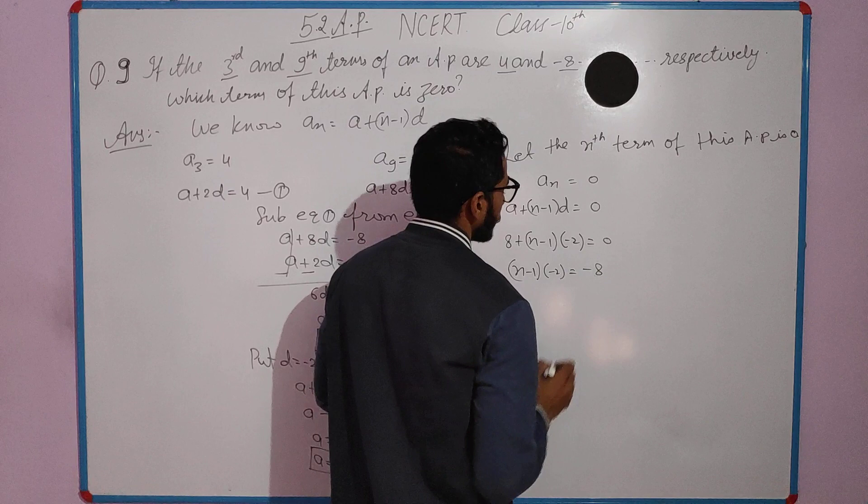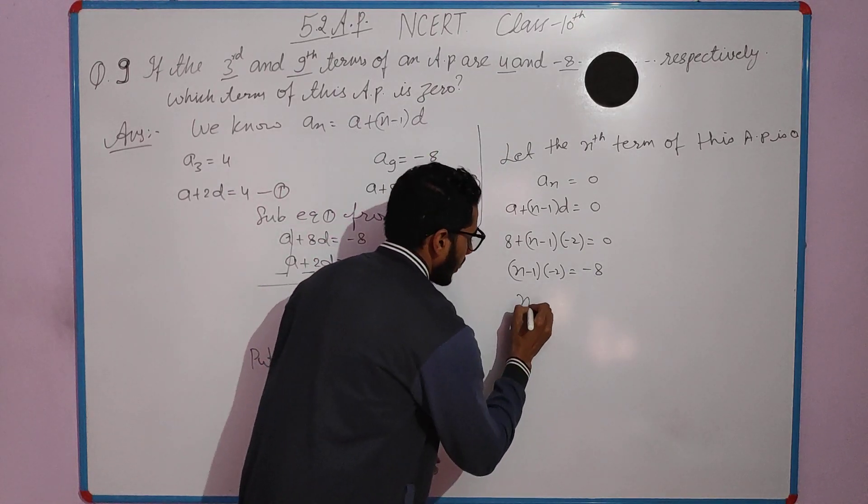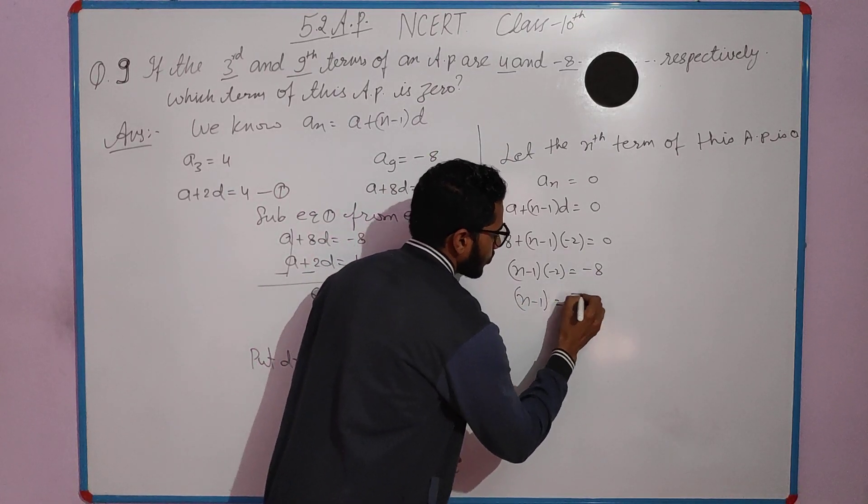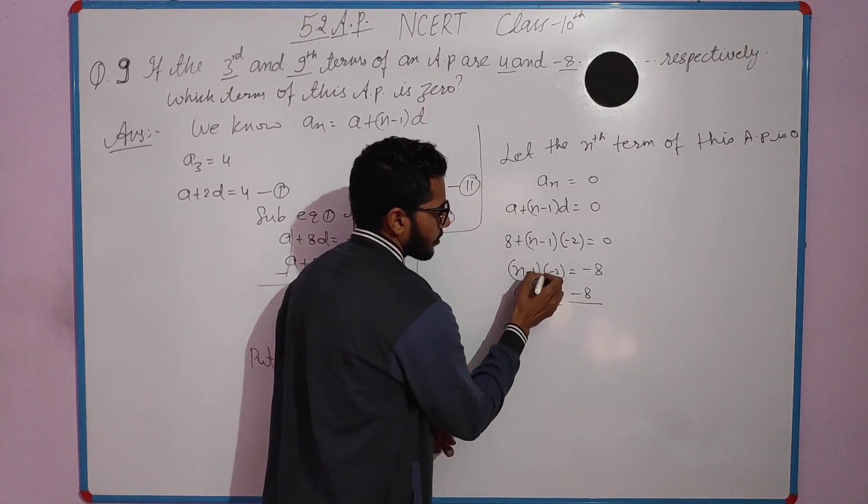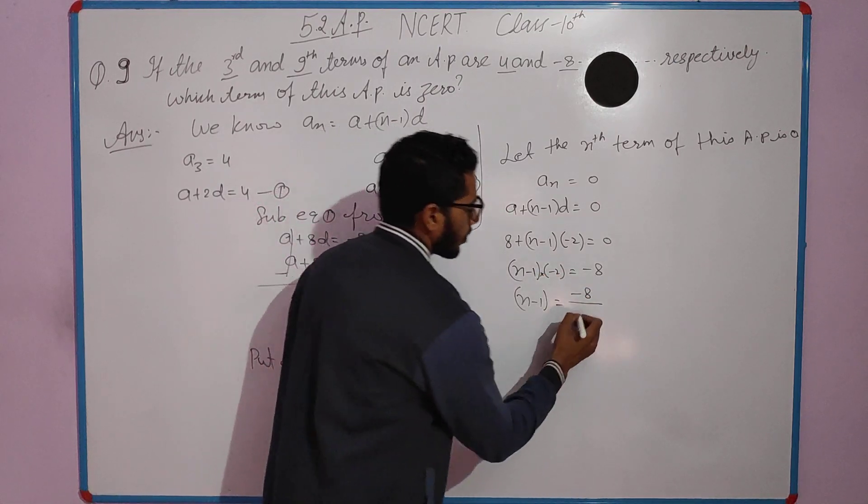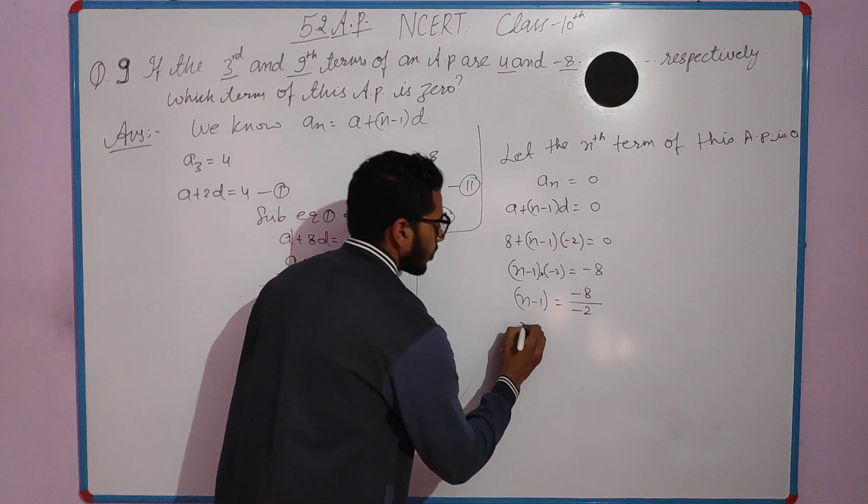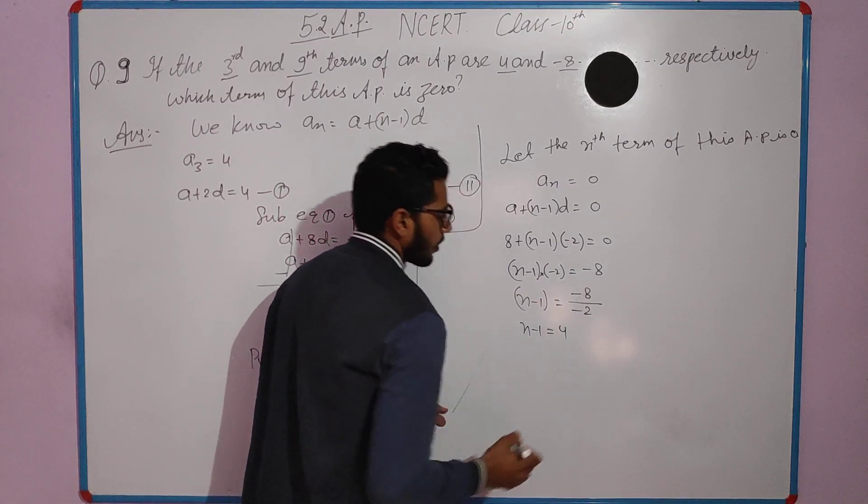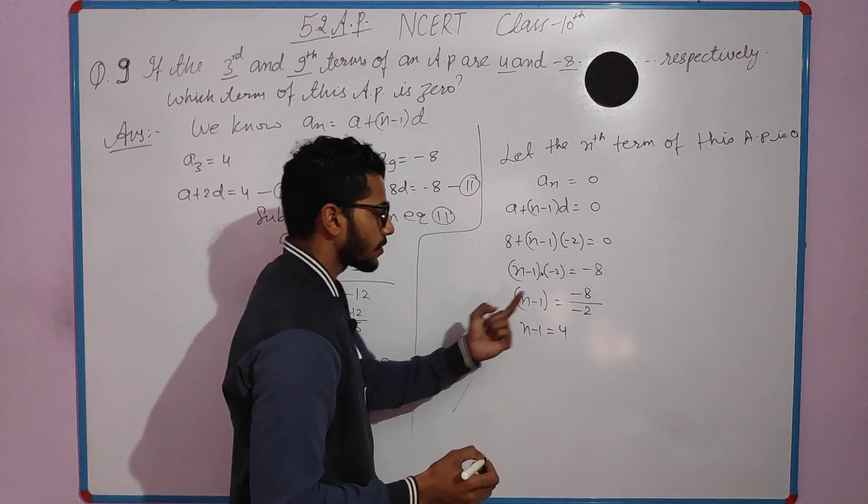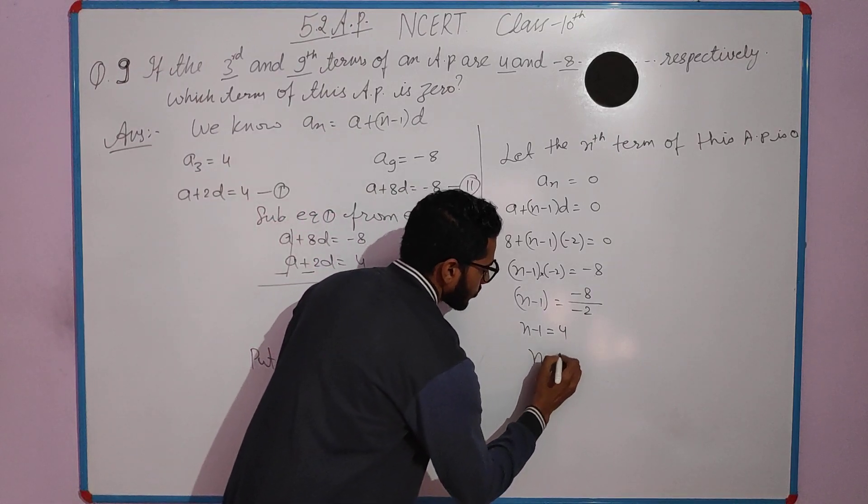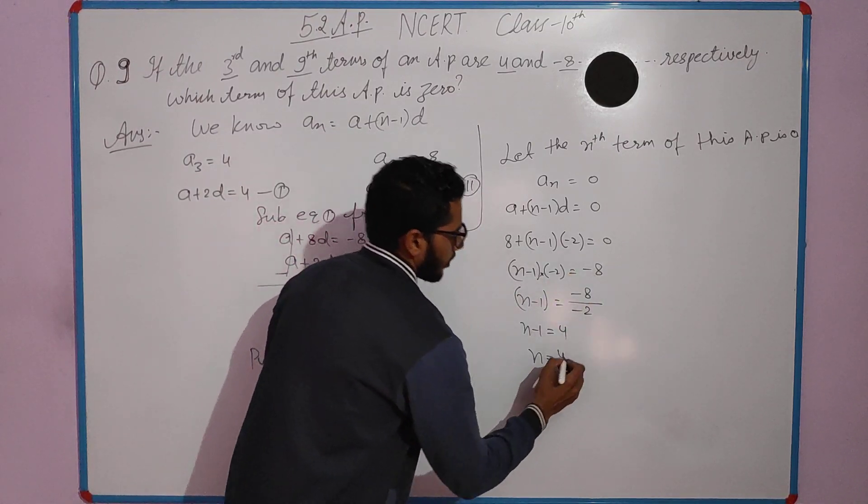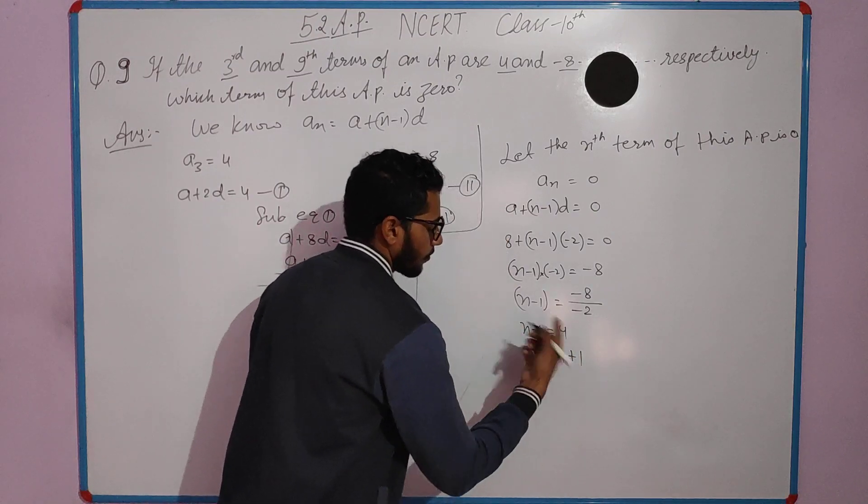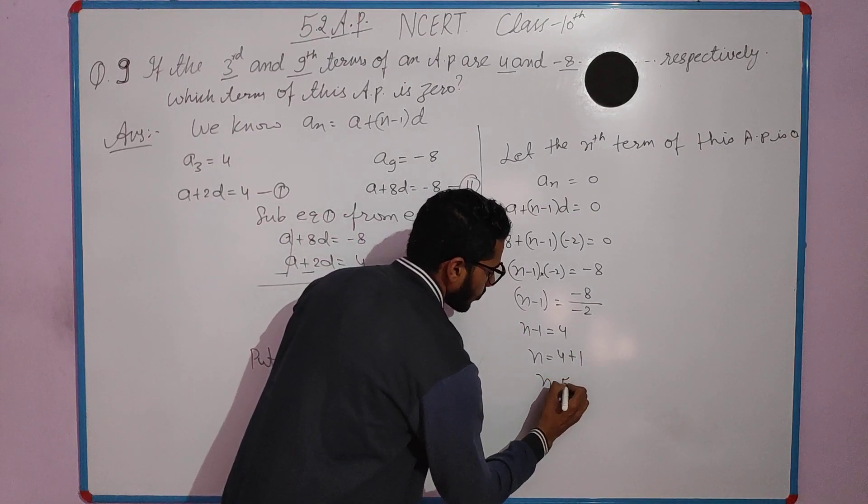So an equals 0. Using the formula a plus n minus 1 into d equals 0, we substitute the values: 8 plus n minus 1 into minus 2 equals 0. So n minus 1 equals 4, which means n equals 5.